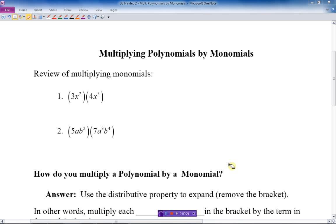Let's begin with reviewing the multiplying of monomials together, just two monomials. How does it work? Let's take a look here. First of all, I've got the first question here, 3x squared times 4x to the fifth. How do I do this?